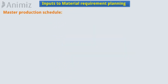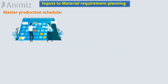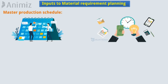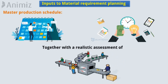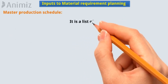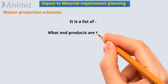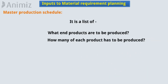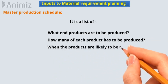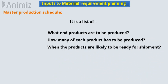Master production schedule: The master production schedule is based on an accurate estimation of demand for the firm's product, together with a realistic assessment of its production capacity. It is a list of what end products are to be produced, how many of each product has to be produced, and when the products are likely to be ready for shipment.